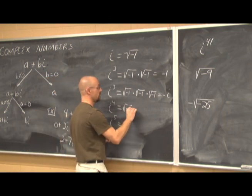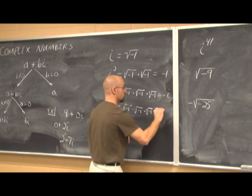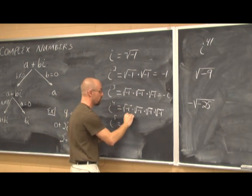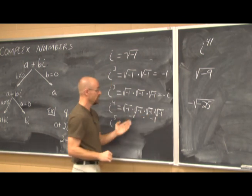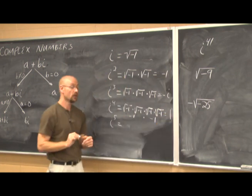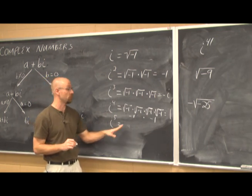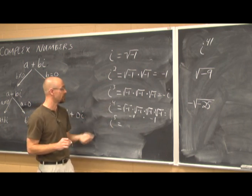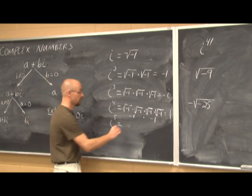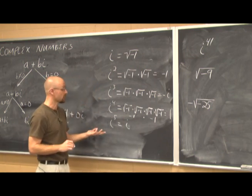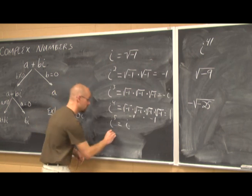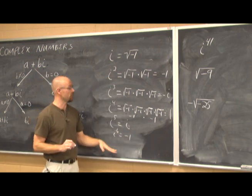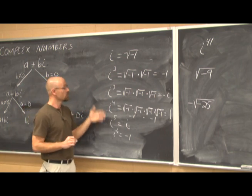For i to the fourth, every pair is negative 1: i² times i² is (-1)(-1) = positive 1. Following the pattern, i to the fifth is i to the fourth times i = 1 times i = i. i to the sixth equals i squared = negative 1. i to the seventh equals i cubed, i to the eighth equals i to the fourth, and so on — the cycle repeats.